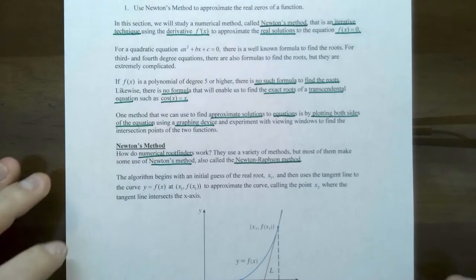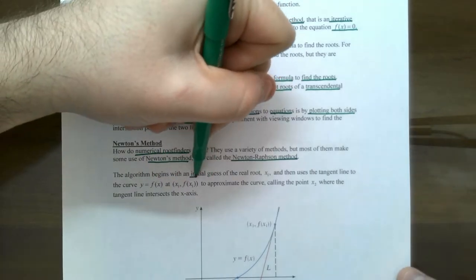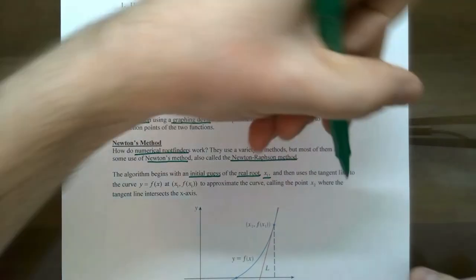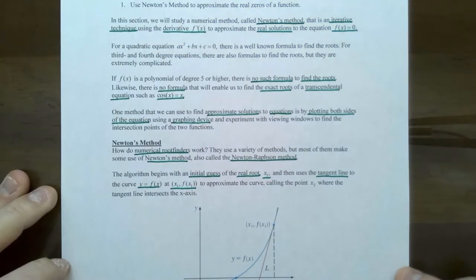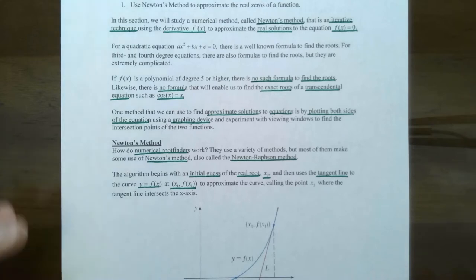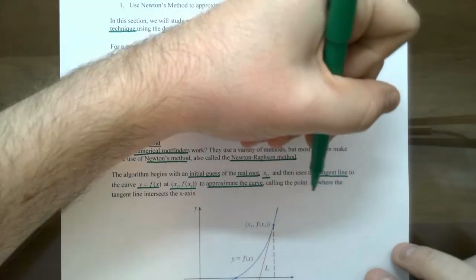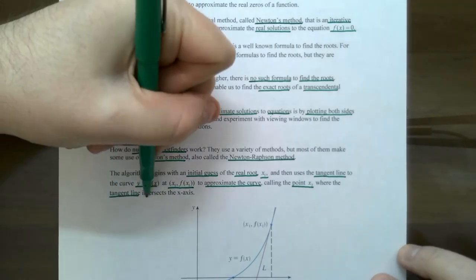Here's how the method works. When you try to find the intersection point on a graphing calculator, the calculator always asks you to enter in a guess. Newton's method starts off with an initial guess for the real root, called x sub 1. Then Newton's method uses the tangent line to the curve at the point x₁, f(x₁), and we approximate the curve, calling x sub 2 the point where the tangent line intersects the x-axis.